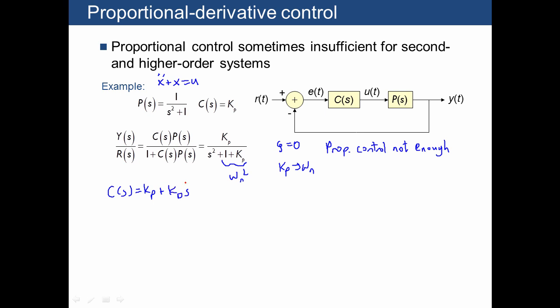This is the derivative term where s stands for taking the derivative. Let's see what the closed loop transfer function looks like in that case. We have y over r equals c times p.